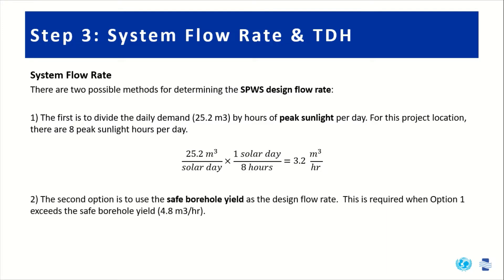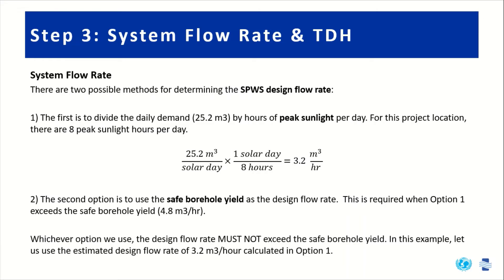The second option is to use the safe borehole yield as the design flow rate. This is required when option one exceeds the safe borehole yield. For this project, the safe borehole yield was 4.8 cubic meters per hour, and our result from option one does not exceed that. Whichever option we use, the design flow rate must not exceed the safe borehole yield. In this example, we'll use 3.2 cubic meters per hour from option one.